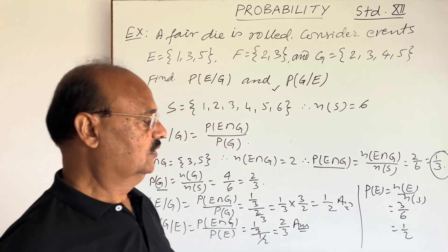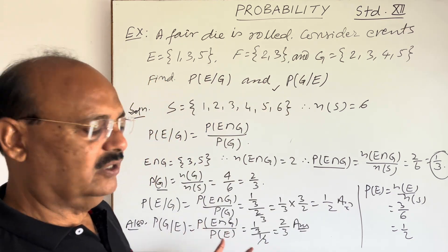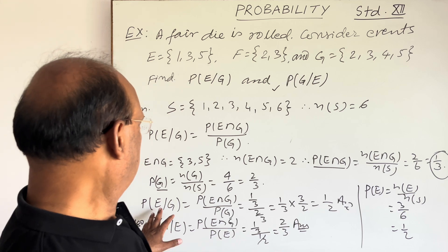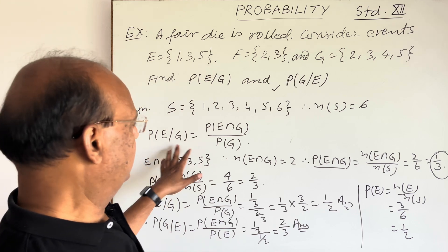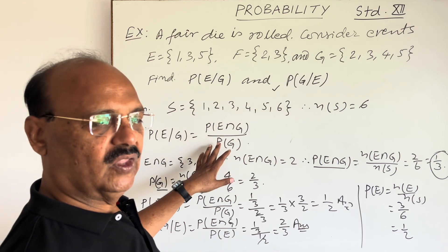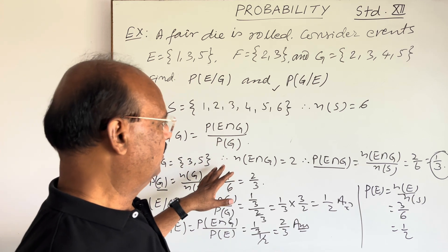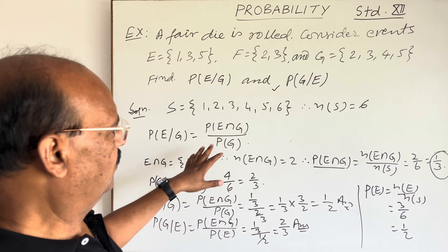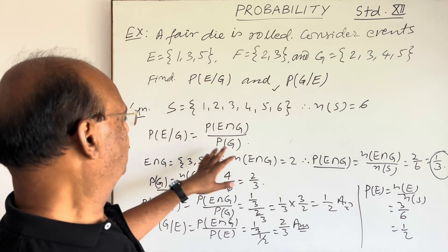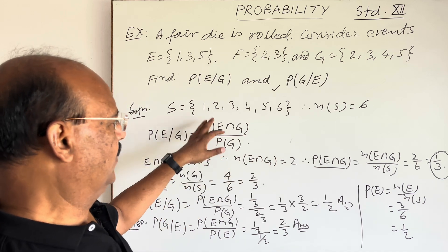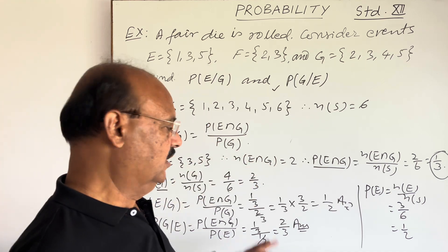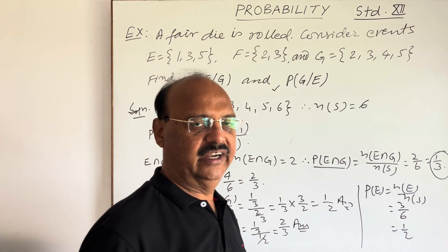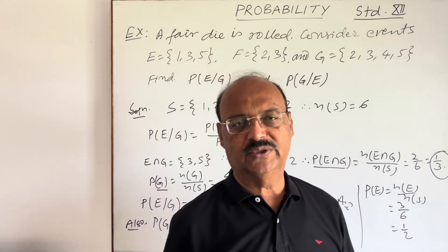So the solution is not difficult — it is simple. Just remember this formula, and remember how to calculate the probability values for the numerator and denominator. Put in the values, simplify, and we will get the result very easily.